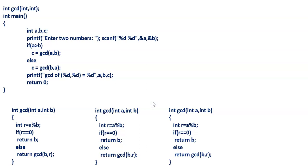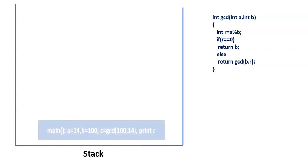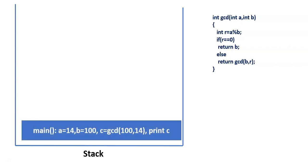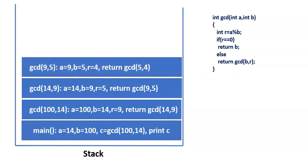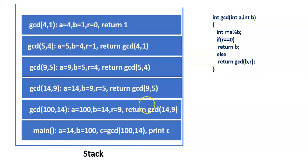Now we see what is the stack involvement. Initially, the main function is called. Let us take A value 14 and B value 100. We want to find out GCD of 14 and 100. It calls GCD(100, 14), passing the biggest value as the first argument. In this function, A=100 and B=14. It calculates remainder: 100 mod 14 — 7 times 14 is 98, remainder is 9. Remainder is not equal to 0, so it calls GCD of B, R — that is GCD(14, 9).